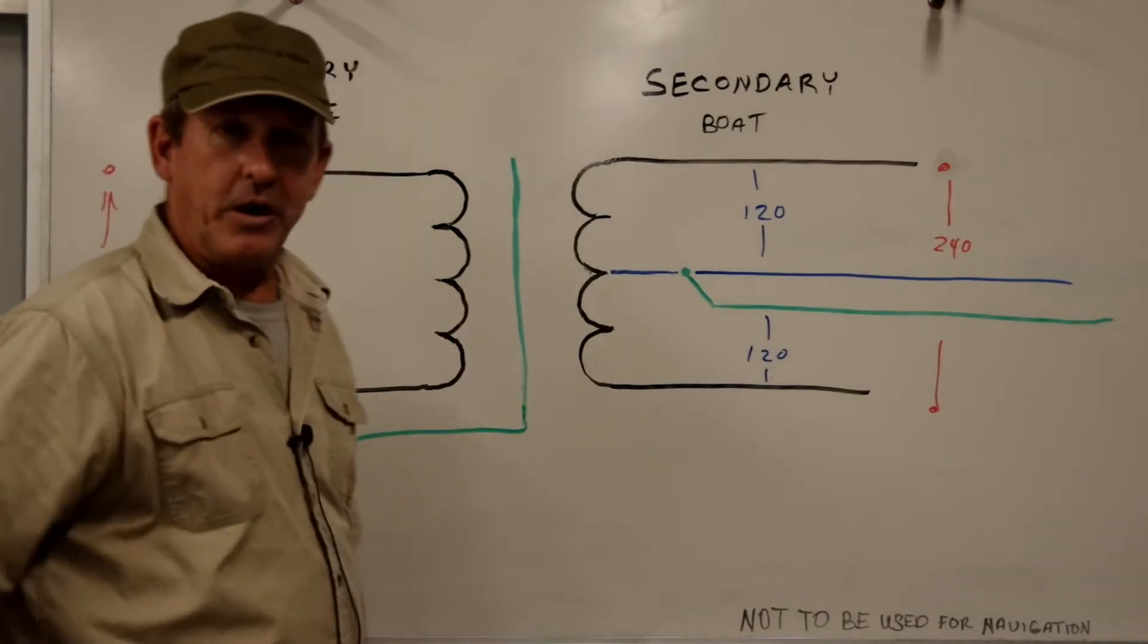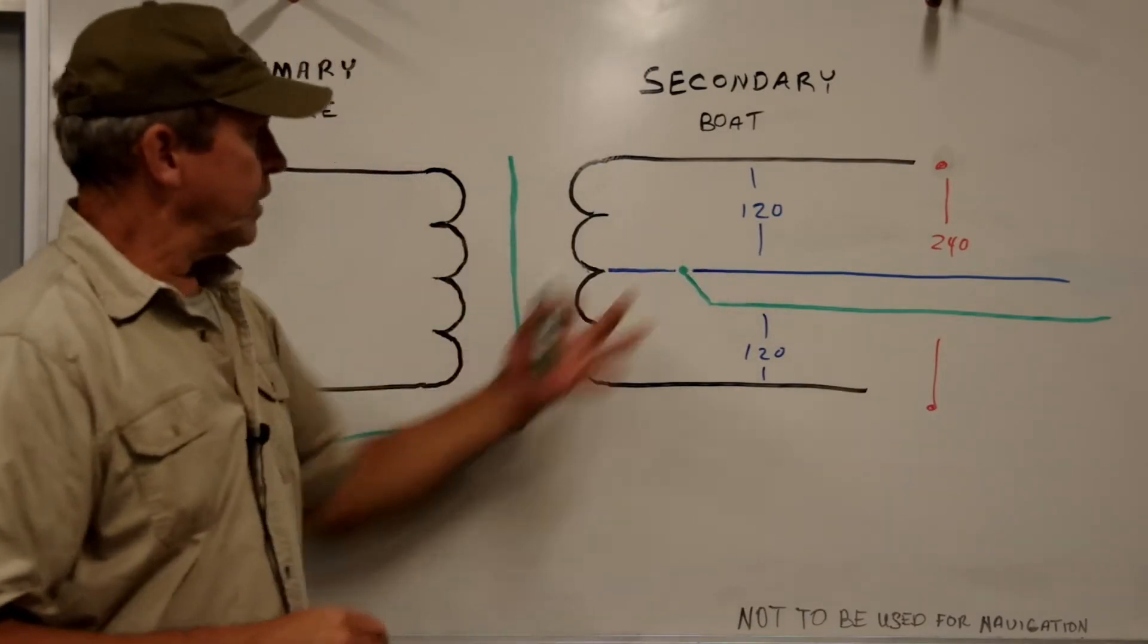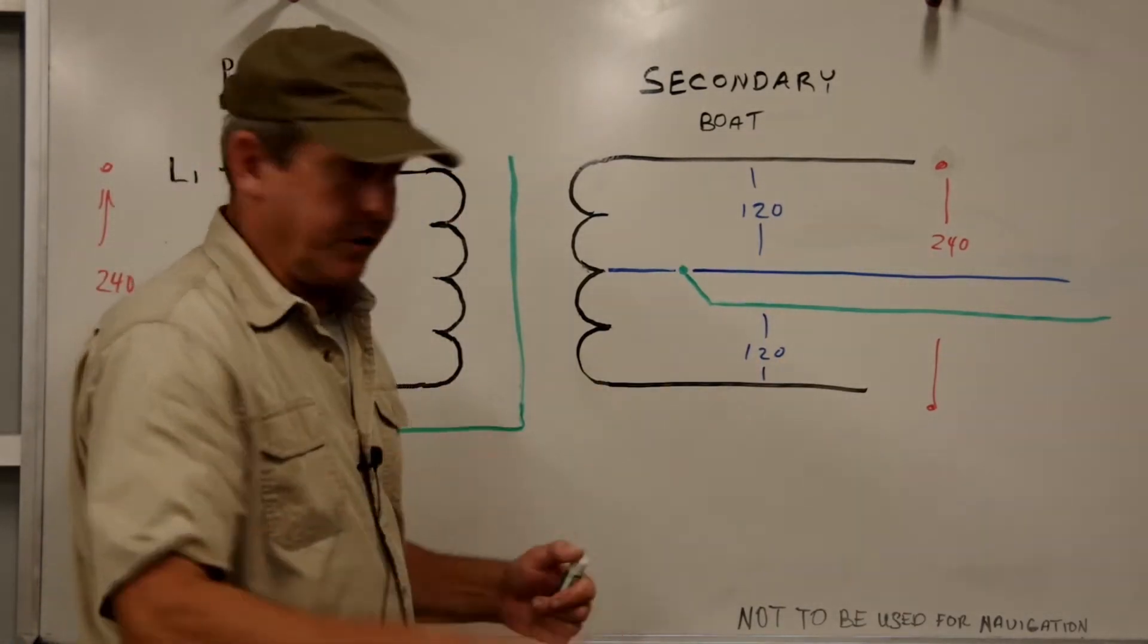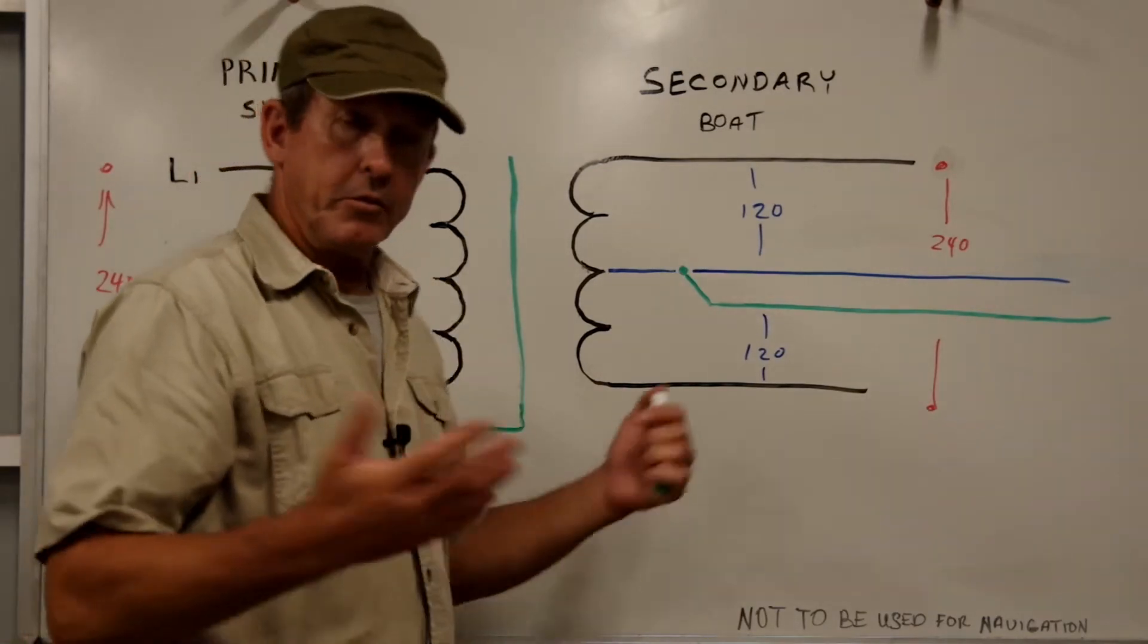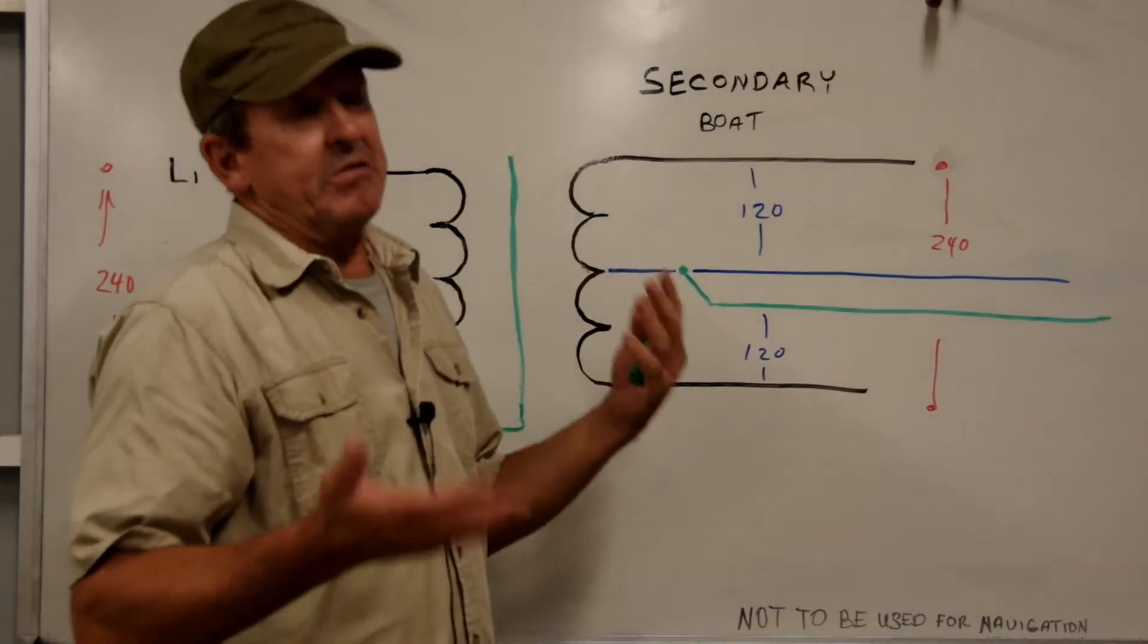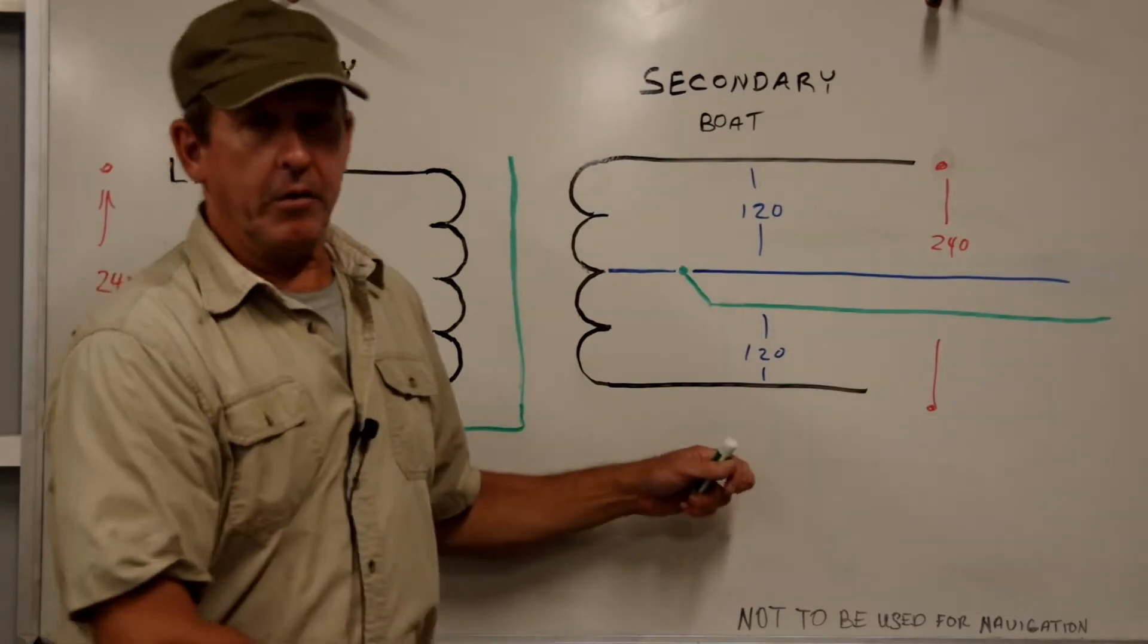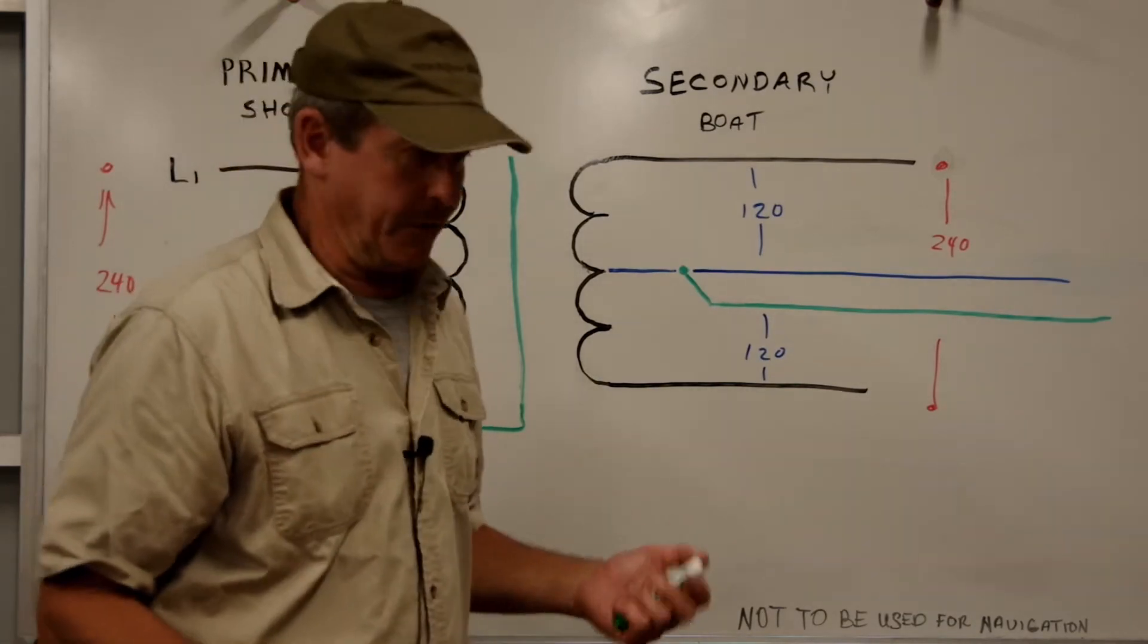So how does this help us? What does this do for us? Well, if we have a boosting transformer and we add some extra windings here—an automatic boosting transformer—we pull into a marina where maybe their voltage isn't quite high enough, it's down around 200 instead of being 240. Well, our automatic boosting transformer will bring our voltage up and make our appliances on board a whole lot happier, and it does that without us thinking about it.